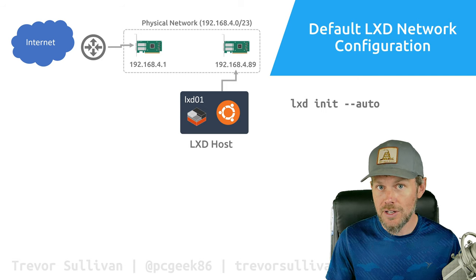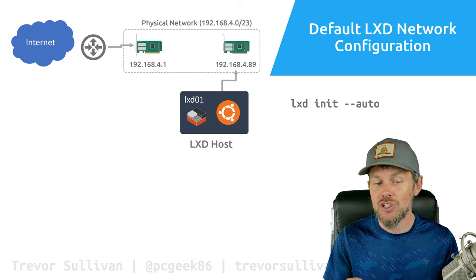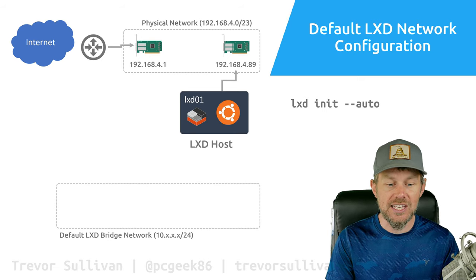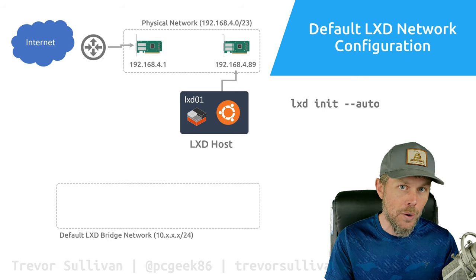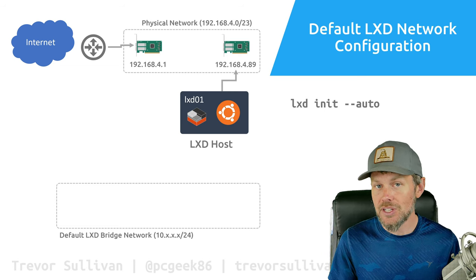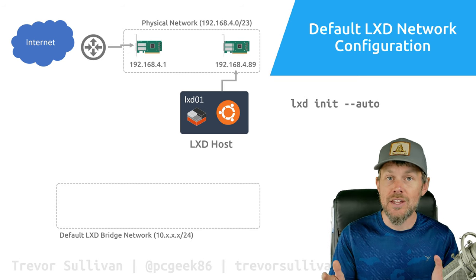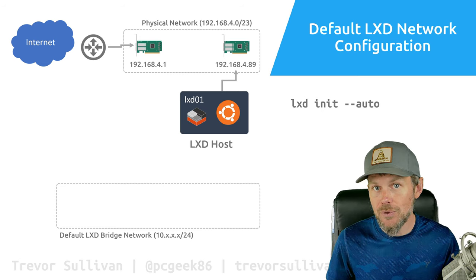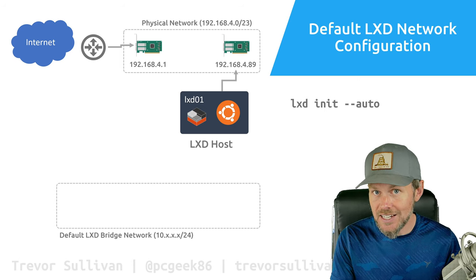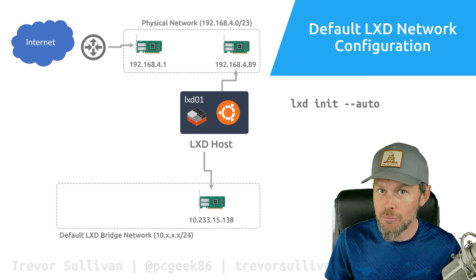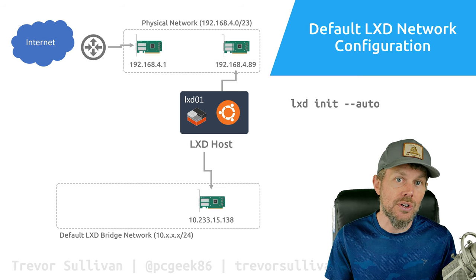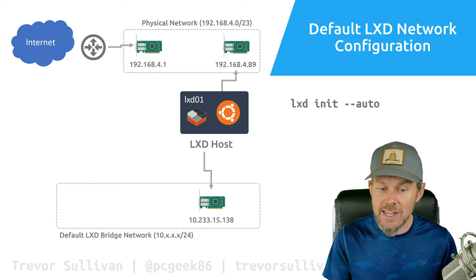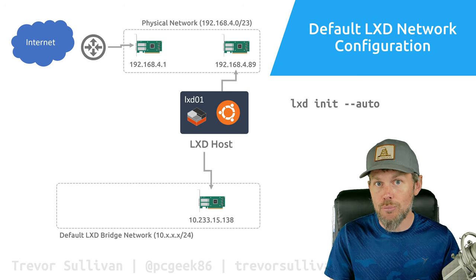We actually want to know how to connect virtual machines to our network. When you run LXD init --auto, the default network configuration in LXD creates an internal virtual network called a bridge network. LXD automatically assigns a CIDR block in the 10.x address space — a /24 block. By default, when you deploy a virtual machine onto your LXD host, it gets connected to this network. As part of initialization, LXD also creates a virtual network adapter on the LXD operating system — in this case Ubuntu Linux — and attaches it to the virtual bridge network.